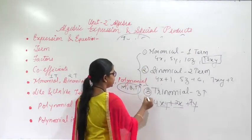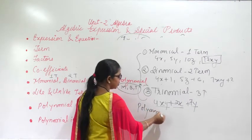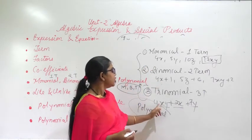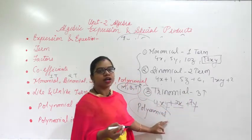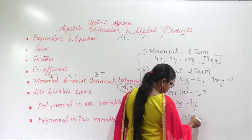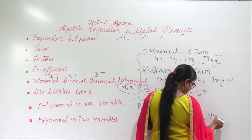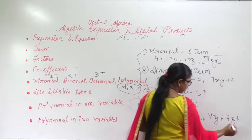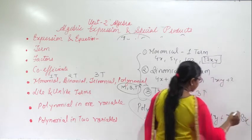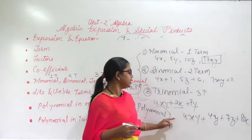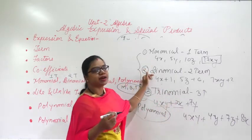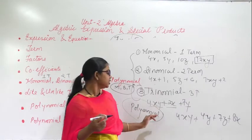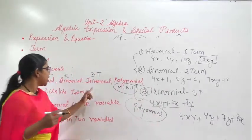All three — monomial, binomial, and trinomial — come under polynomial. If you write 4x it is a polynomial; 4x plus 1 is also a polynomial; 4x plus 2x plus 7y is also a polynomial; and 4xy plus 4y plus 7z plus 8x is also a polynomial. If it contains more than 3 terms it falls under polynomial.